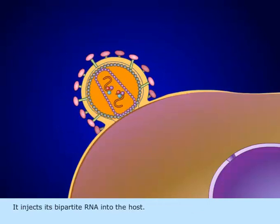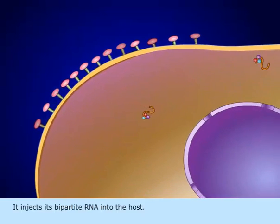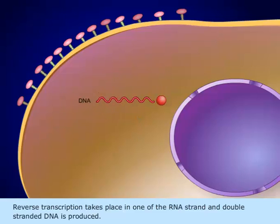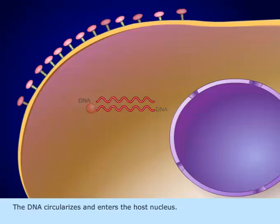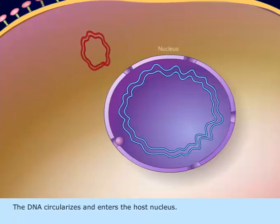It injects its bipartite RNA into the host. Reverse transcription takes place on one of the RNA strands and double-stranded DNA is produced. The DNA circularizes and enters the host nucleus.